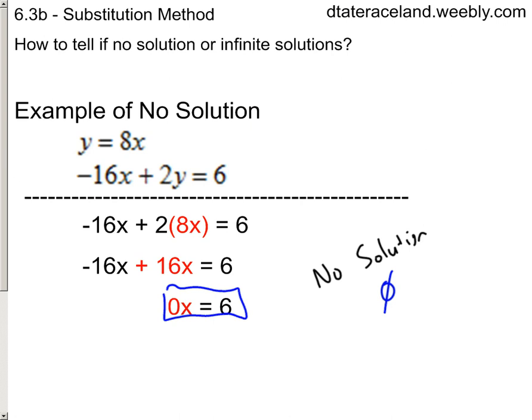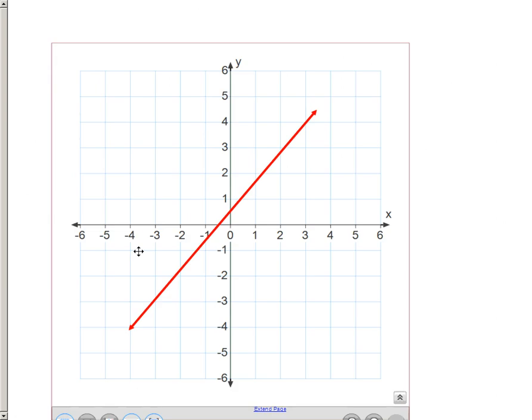But now we also need to take a look at the infinite solution setup. And that's where you graph two lines, and then you find out it's the exact same line. There's actually two lines right here, but they're right on top of each other, so you can't really tell. But that means any point on these lines would basically make both of the equations true. So this is an infinite solution setup. It doesn't mean any point works. It means any point on these lines work, because they're touching in more than one spot.